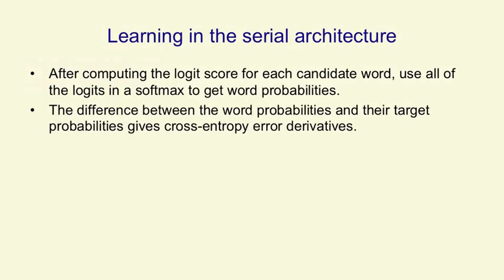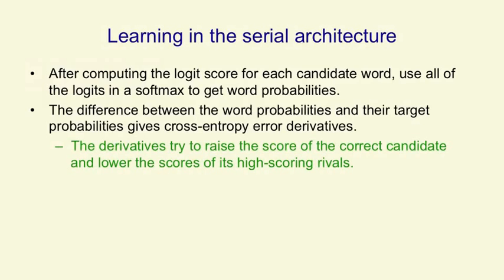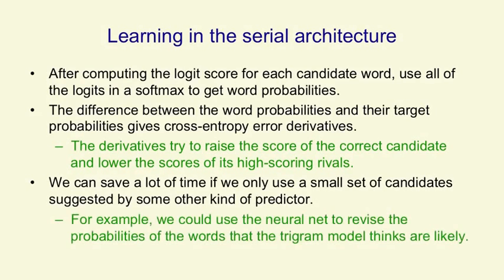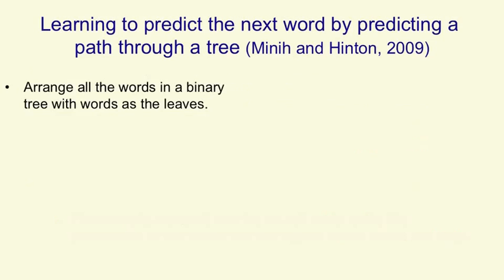The difference between the word probabilities and their target probabilities, which is normally one for the correct word and zero for everything else, gives us the cross-entropy error derivatives. We use those derivatives to change the weights in such a way that we raise the score for the correct candidate and lower the scores for all of its high-scoring rivals. We can save a lot of time in this architecture if, instead of considering all possible candidate words, we only consider a small set, perhaps candidate words suggested by some other predictor. For example, we could use the neural net to revise the probabilities of the words that the trigram model thinks are likely.